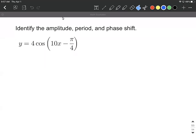All right, let's find the amplitude, period, and phase shift for a trigonometric function, in this case the cosine function.